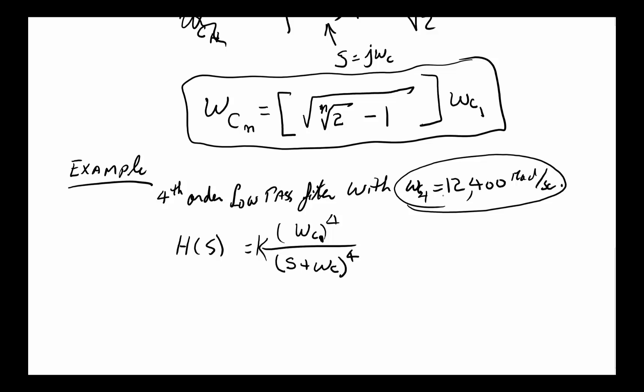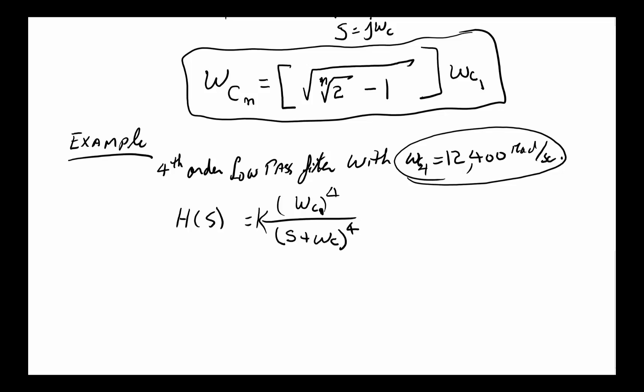But now the question is, what should this omega_C of one be if we want to have the new frequency be at that place? So we're going to use this equation from here, and we say, okay, we want this to be at 12,400. The question is, where should we design omega_C1 to be? And we're going to use this equation, and N in this case is 4 minus 1.